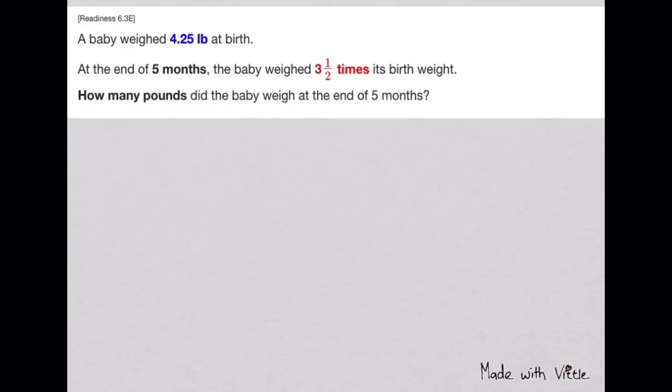A baby weighed 4.25 pounds at birth. At the end of 5 months, the baby weighed 3 and a half times its birth weight. How many pounds did the baby weigh at the end of 5 months? Look for keywords. You have to read twice or more to understand the problem.